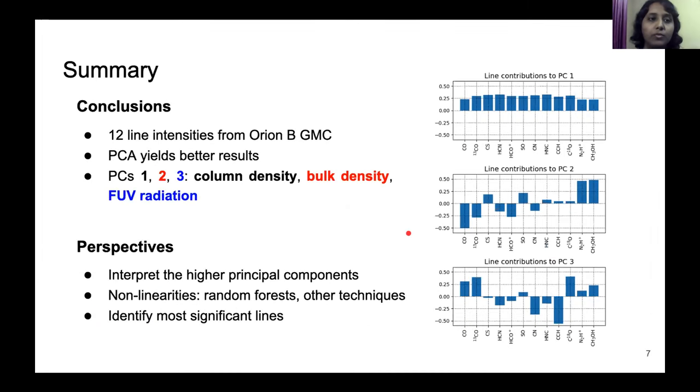So to summarize, we have used 12 line intensities in all, and we find that the principal component analysis works better than the traditionally used methods. We have analyzed the first three principal components.